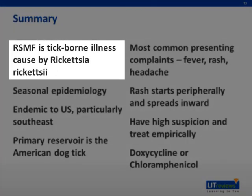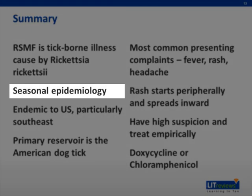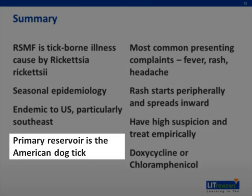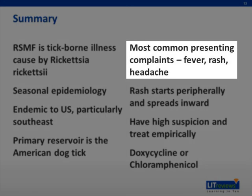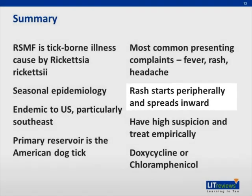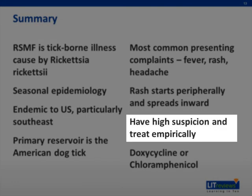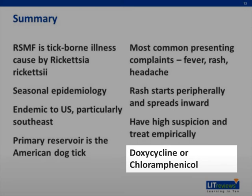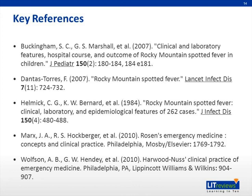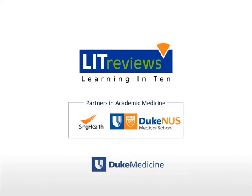In summary, Rocky Mountain Spotted Fever is a tick-borne illness caused by the obligate intracellular parasite Rickettsia rickettsii. It has markedly seasonal epidemiology occurring only in warm months, consistent with the natural life cycle of its vector. It is endemic to the U.S., particularly the southeast, and its primary reservoir is the American dog tick, Dermacentor variabilis. The most common presentations include fever, rash, headache, and myalgias — a maculopapular rash that starts on the hands, soles, and forearms and spreads inward. You must have high clinical suspicion and treat empirically, not delaying for laboratory studies. Definitive treatment is doxycycline or chloramphenicol. Thank you — this has been another Learning in 10 review.